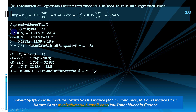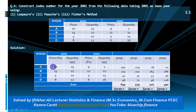The regression line of y on x: y − ȳ = β(y on x) × (x − x̄). Putting all values in and solving gives: y = 7.31 + 0.5285x, where 7.31 is α and 0.5285 is β. For regression line of x on y, interchange the formula: x − x̄ = β(x on y) × (y − ȳ), which gives x = −10.386 + 1.74y.